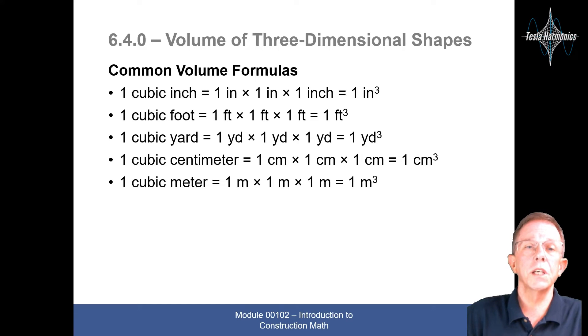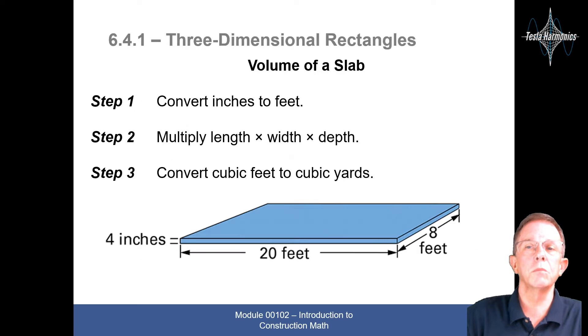Volume of three-dimensional shapes. Common volume formulas. One cubic inch is one inch times one inch times one inch equals one cubic inch. Cubic foot is one foot times one foot times one foot equals a cubic foot. Cubic yard, one yard times one yard times one yard is one cubic yard. Cubic centimeter, one centimeter times one centimeter times one centimeter equals a cubic centimeter. A cubic meter, one meter times one meter times one meter equals a cubic meter.